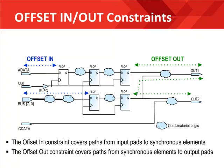The offset out constraint will cover the three output pads. A lot of people don't easily understand how there can be three output pads — it's simple: the two source flip flops have three different ways to get to two output pins. The number of pads will vary greatly by the behavior of your design. Also, you should note that even after specifying an offset in, an offset out, and a period constraint, it is still possible to have unconstrained delay paths, such as purely combinatorial paths. The offset in and out constraints do not cover paths between synchronous elements, and they do not cover paths that are purely combinatorial.